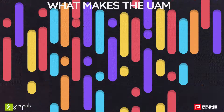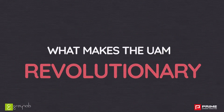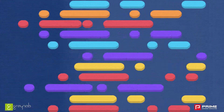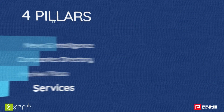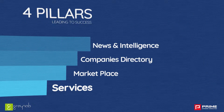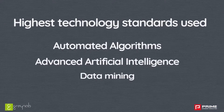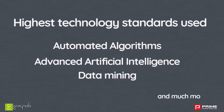You might wonder what makes the United Arab Market a revolutionary platform. The answer to that is four main pillars: news and intelligence, companies directory, trading platform, and ecosystem of service providers — in addition to the highest technology standards used.